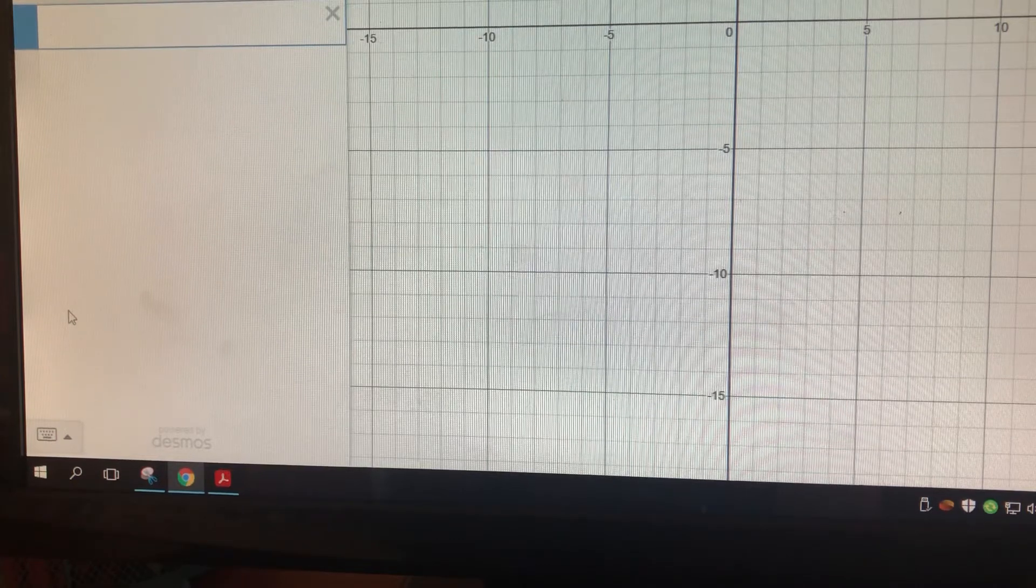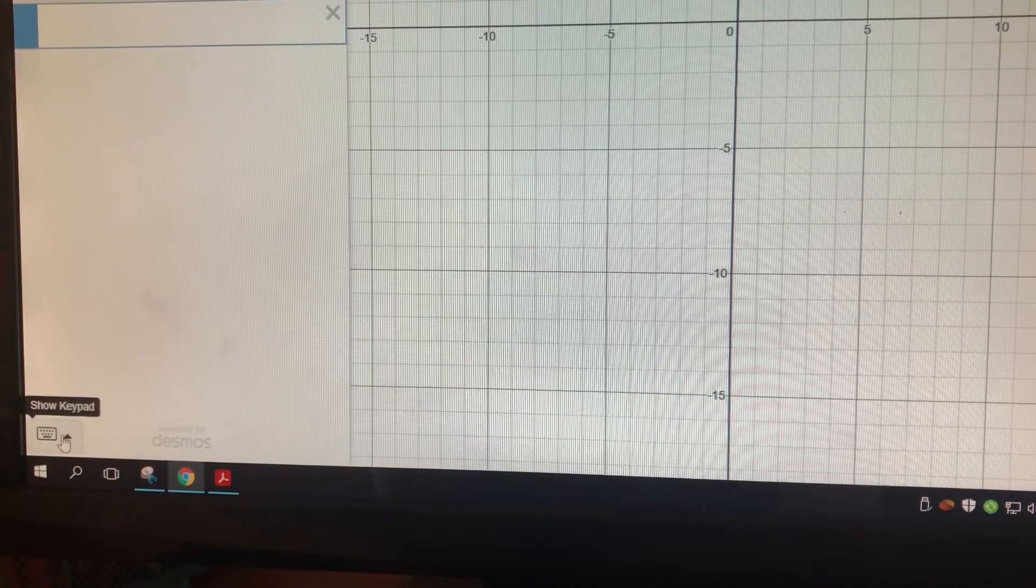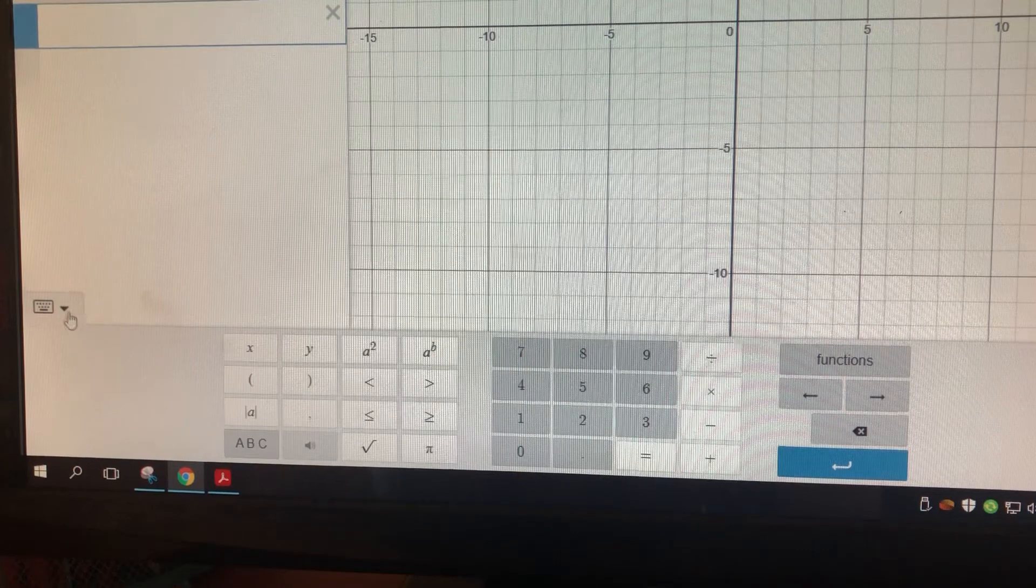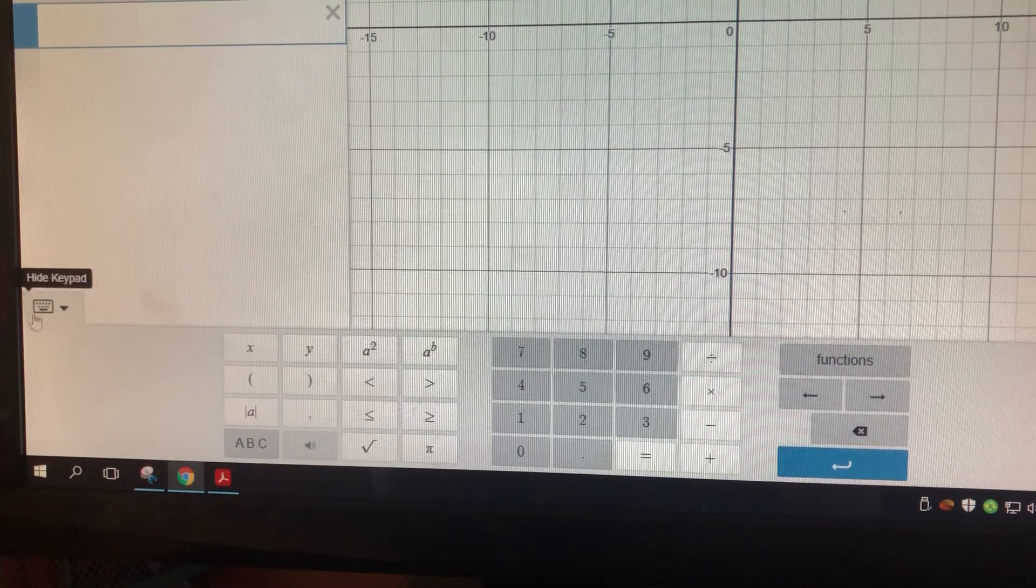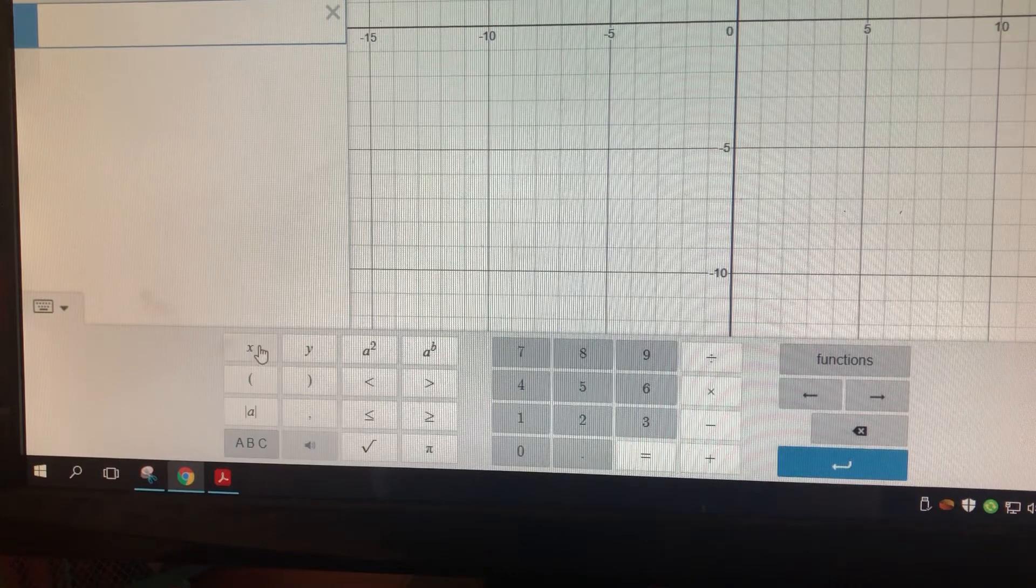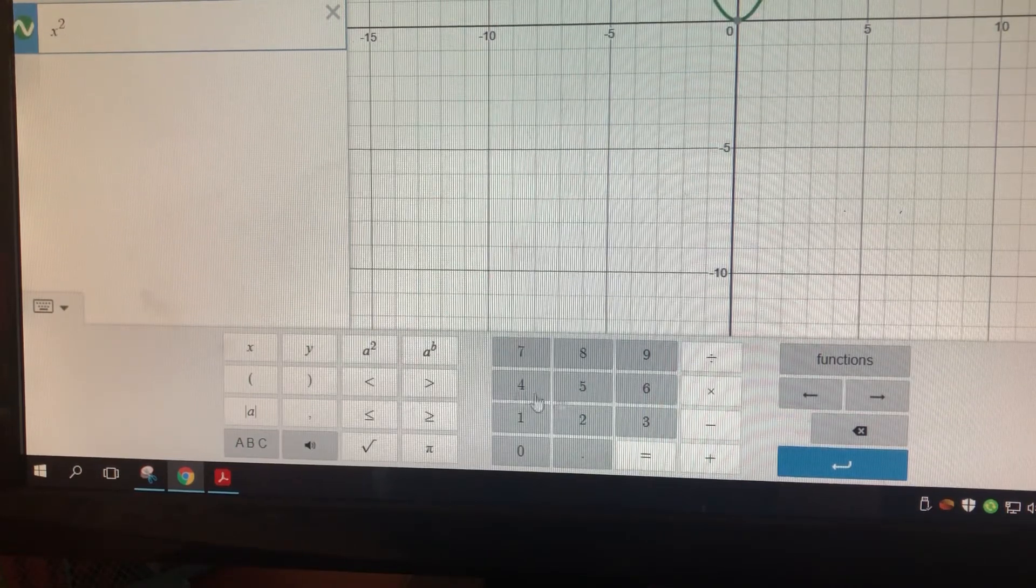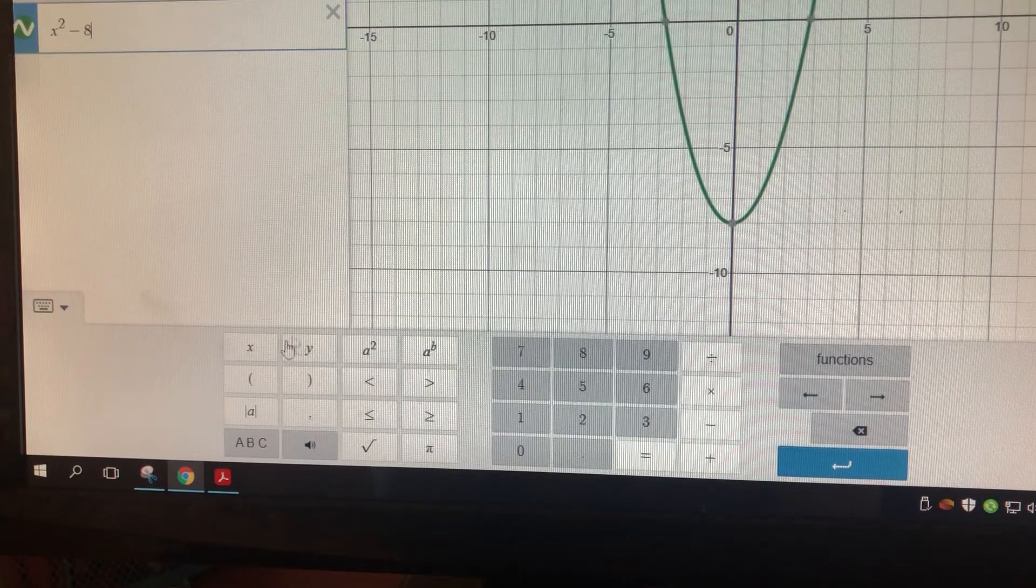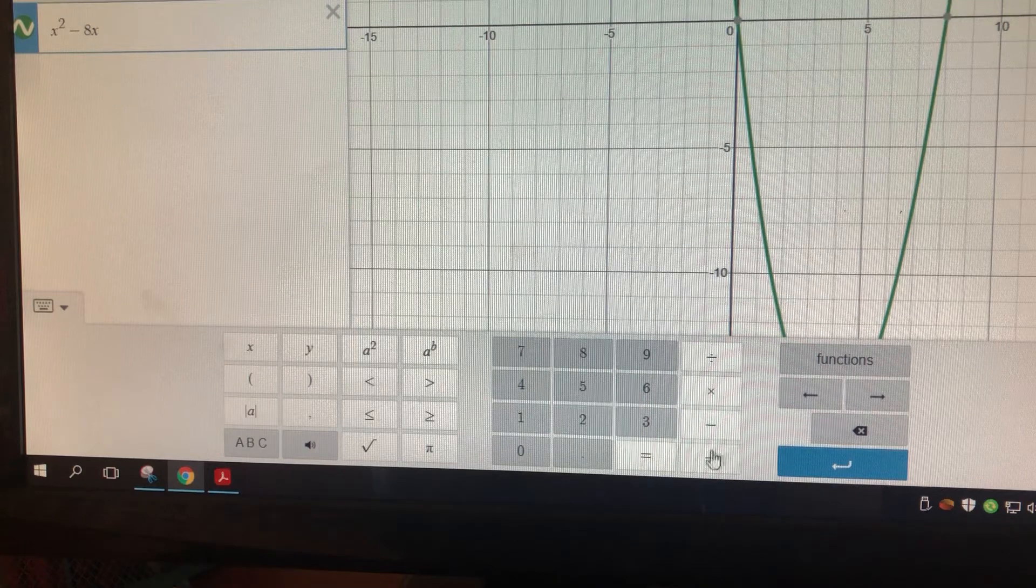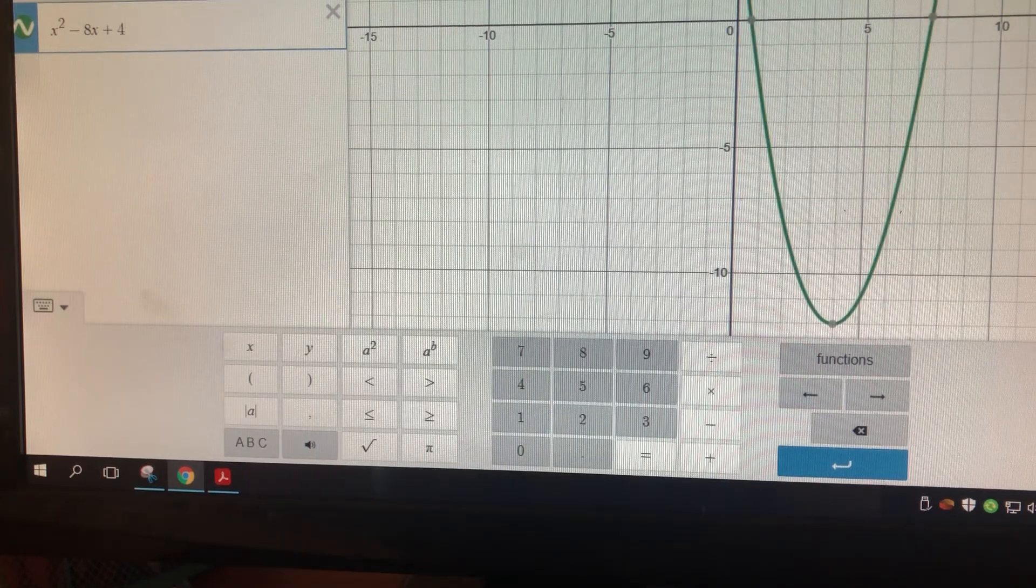So let's look at number 13, finding the average rate of change for the function f of x equals, so I just clicked on this keyboard here, and now I can type in my function. So x squared minus 8x plus 4. All right, so there's my graph there.